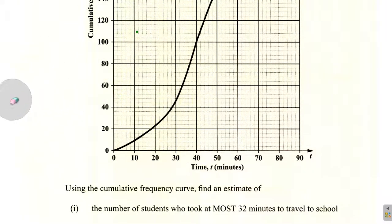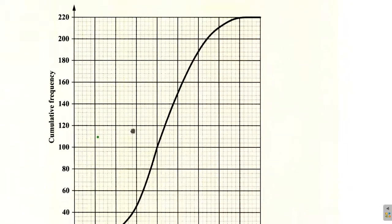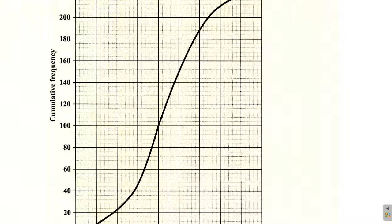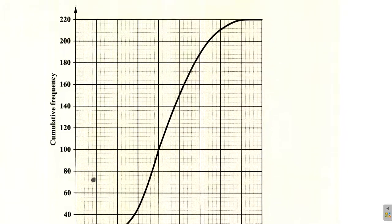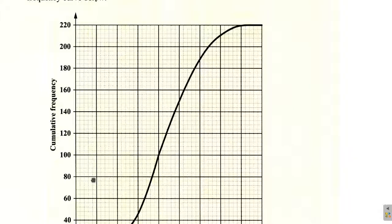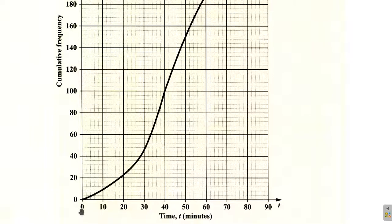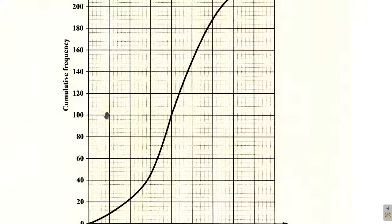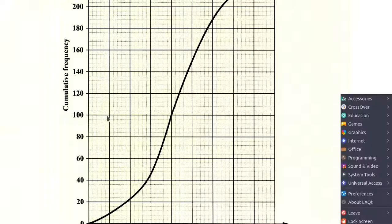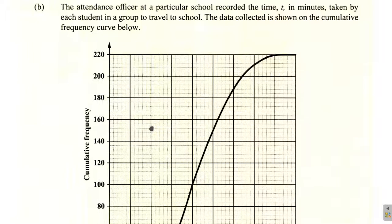The interquartile range is the middle quarter, the amount between 25% and 75%. You have 4 quartiles of the cumulative frequency curve. 0 to 25% is the first quartile, 25 to 50% is the second quartile, 50 to 75% is the third quartile, then 75 to 100% is the fourth quartile. We want to see what's going on between 25% and 75%. Now the cumulative frequency curve goes up to 220.